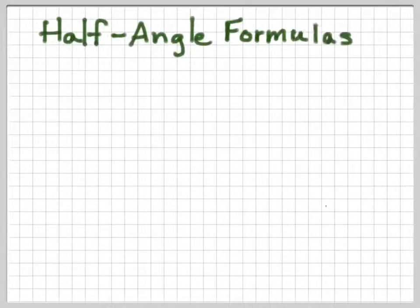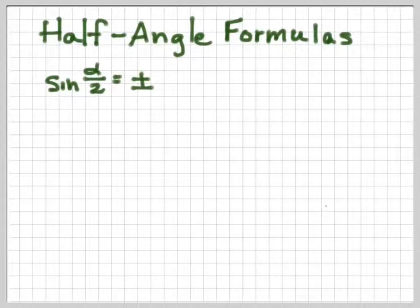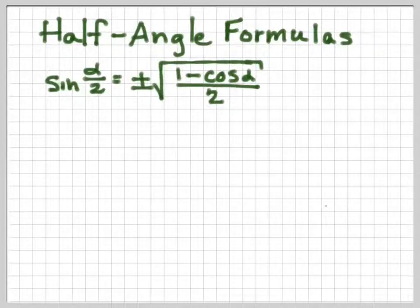Half-angle formulas. The sine of α/2—now we're going to use α instead of θ so that we can distinguish between a whole angle and a half angle. So sin(α/2) equals plus or minus the square root of (1 - cos α)/2.